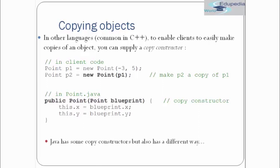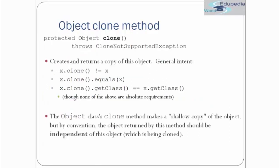Java has some copy constructor support but also has different ways. In a previous tutorial where we were studying about the object class, we have seen that the object class does have a method called clone. The object method clone is actually used to create the copy of an object.